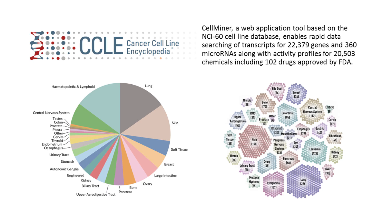The Cancer Cell Line Encyclopedia, or CCLE, project started in 2008 as a collaboration between the Broad Institute and the Novartis Institutes for Biomedical Research and its Genomics Institute of the Novartis Research Foundation. The goal is to conduct a detailed genetic and pharmacologic characterization of a large panel of human cancer models, to develop integrated computational analyses that link distinct pharmacologic vulnerabilities to genomic patterns, and to translate cell line integrated genomics into cancer patient stratification. As of summer 2018, CCLE continues its efforts as part of the Broad Cancer Dependency Map project.